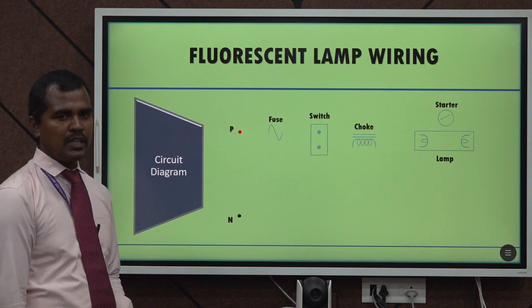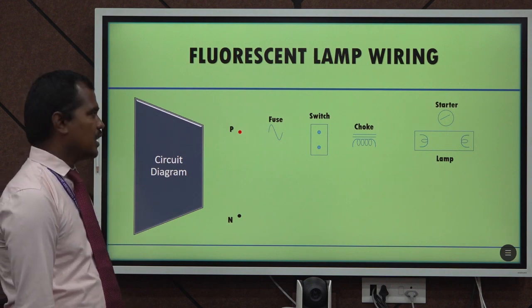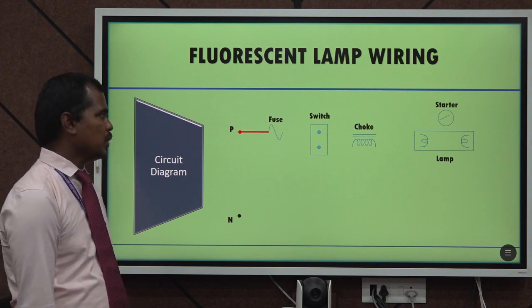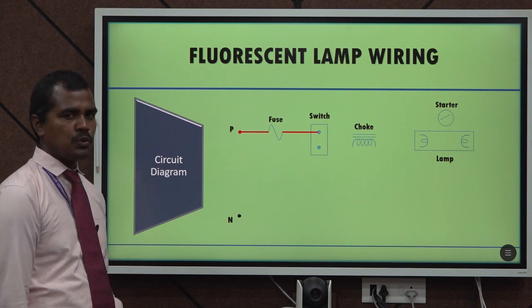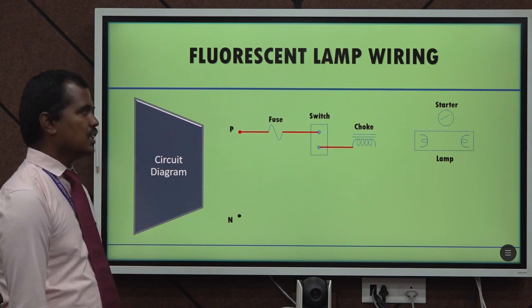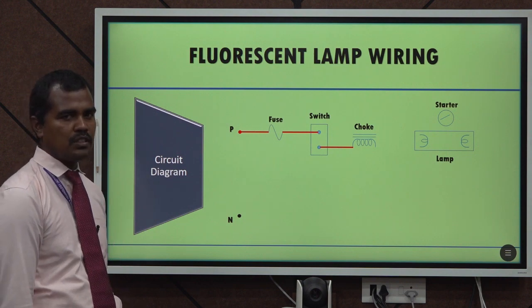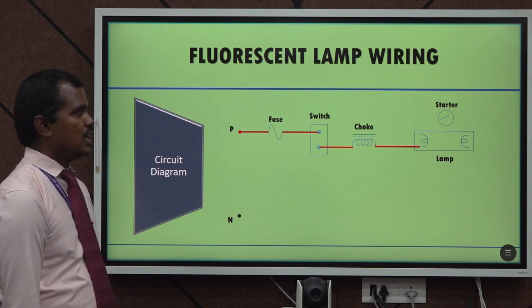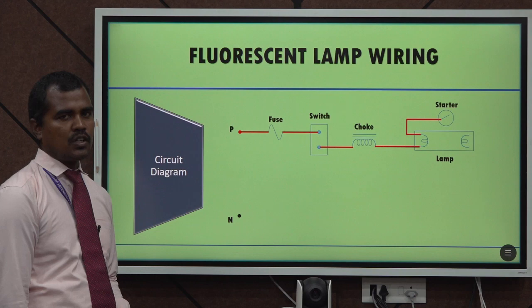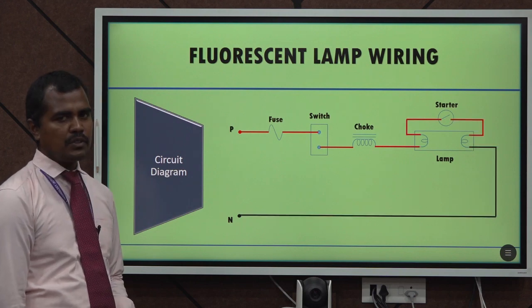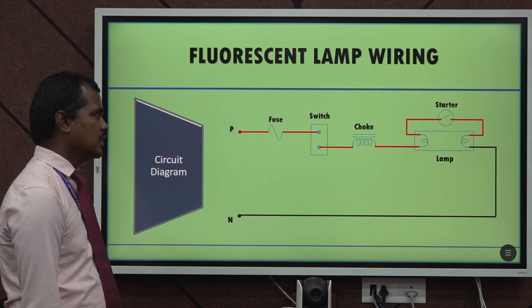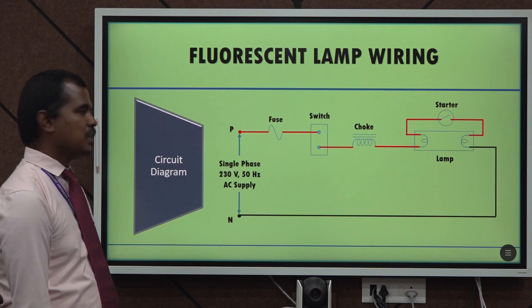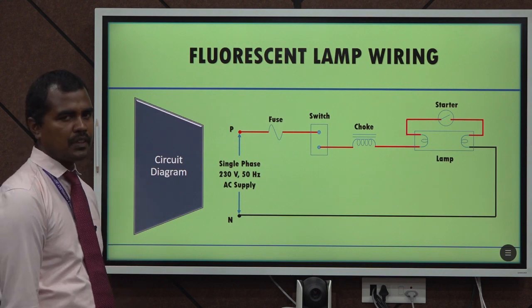So now I will explain how to connect. A wire from the phase to one end of the fuse and another wire from the other end of the fuse to one end of the switch. The other end of the switch is to be connected with the choke and the choke is connected with the fluorescent lamp. And the starter is to be connected across the lamp and the other end of the lamp has to be connected with the neutral point. So this is the entire connection diagram and it has to be connected with the single phase 230 volt AC supply.